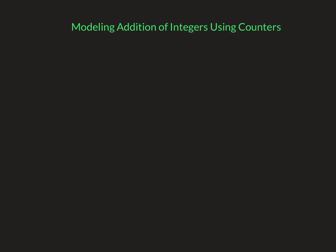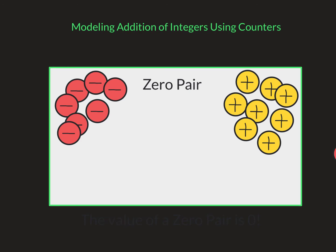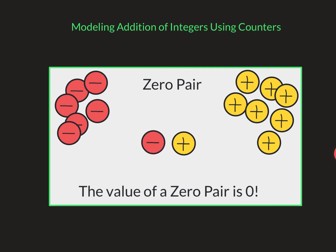Before we get started, we need to talk about what a zero pair is. A zero pair is when you have a negative chip and a positive chip. Those two together equal zero. If we have a negative one and a positive one, that's going to meet in the middle and that's going to be zero. This is going to be really important when we use these models when we're doing addition and later on when we're doing subtraction.